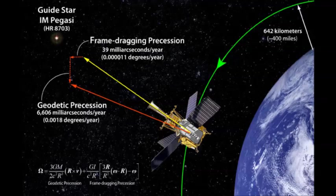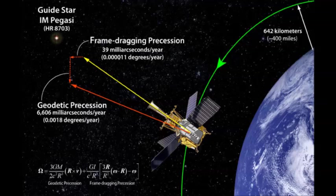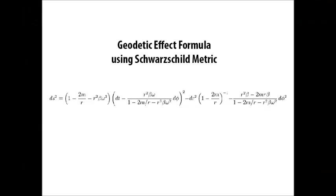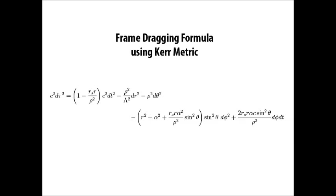Gravity Probe B uses a gyroscope to measure the geodetic effect and frame dragging caused from allegedly the Earth warping spacetime. However, the formulas used are incapable of determining if the effect is caused by a medium such as spacetime or a medium such as a field.